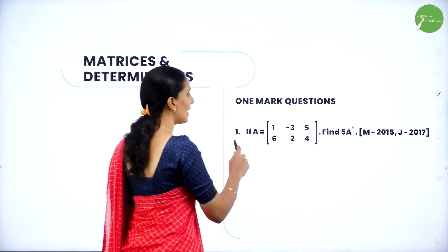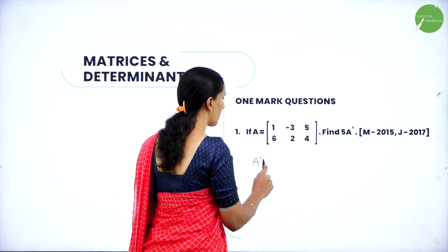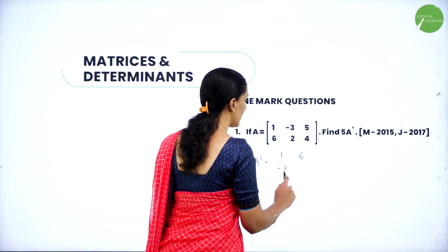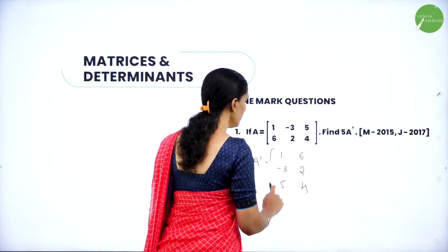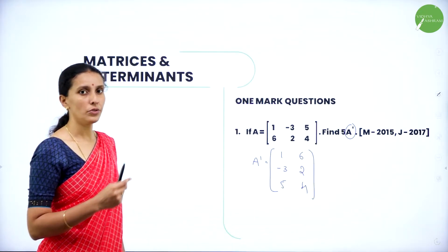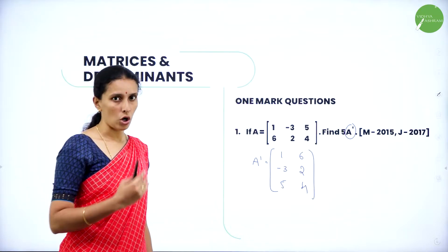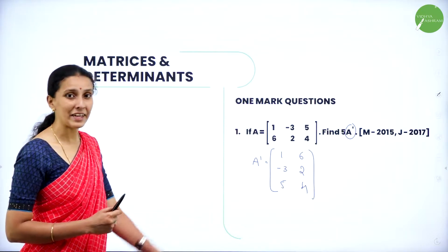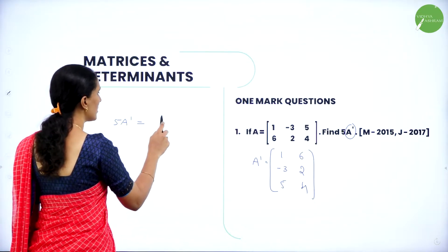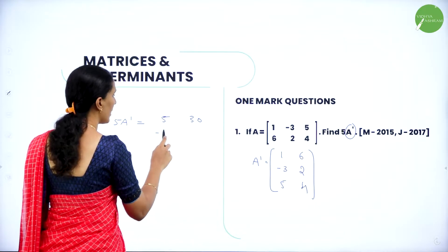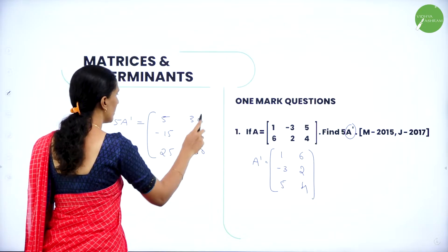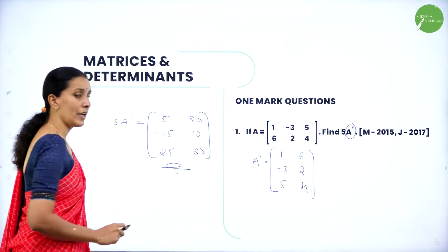First let us find A dash. A dash is: [1, 6; -3, 2; 5, 4]. A dash is nothing but transposing the given matrix, converting rows to columns or columns to rows. Now we have A dash, but we need 5A dash. So 5A dash is [5, 30; -15, 10; 25, 20]. This is the matrix 5A dash.